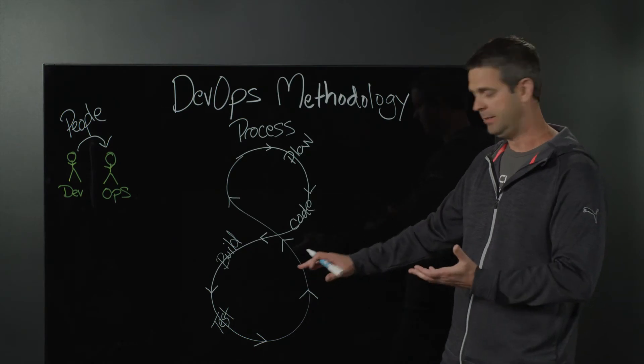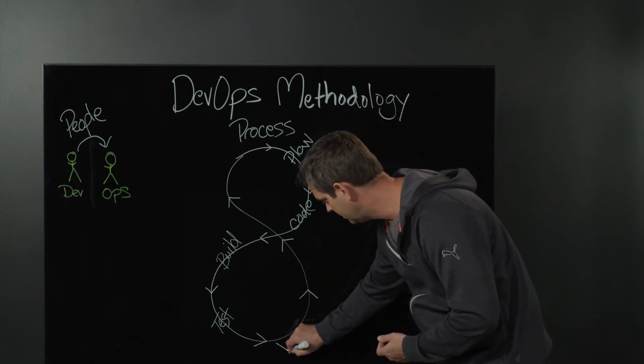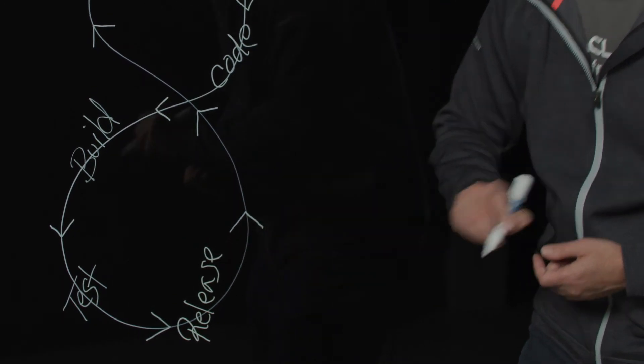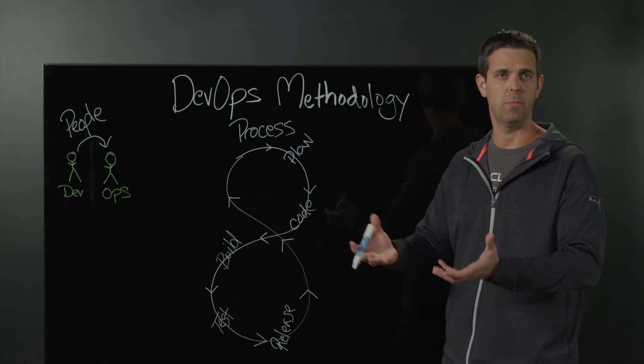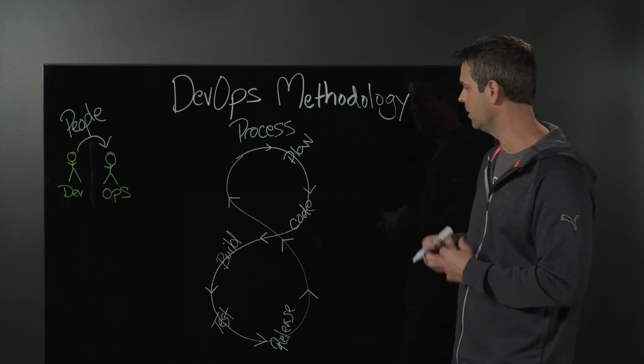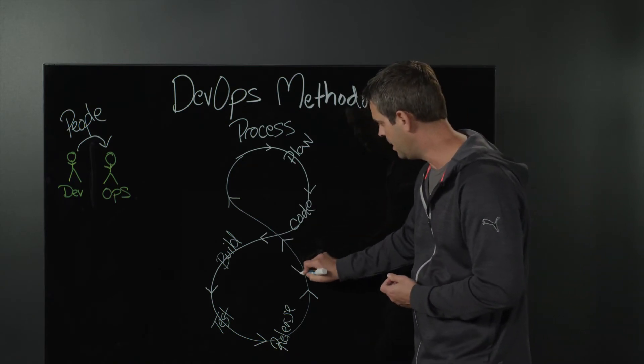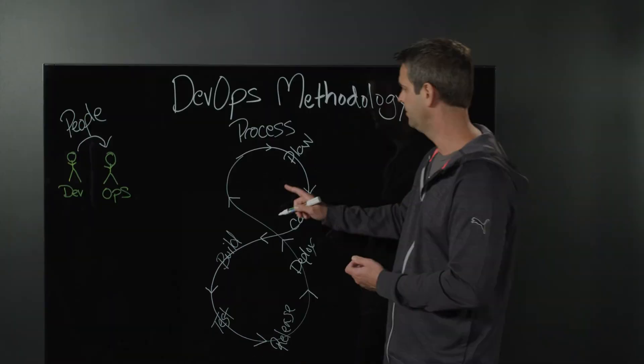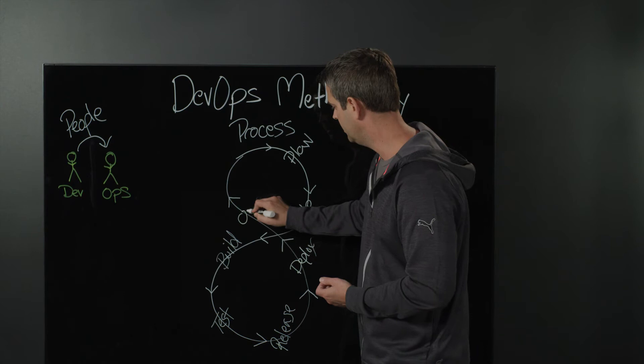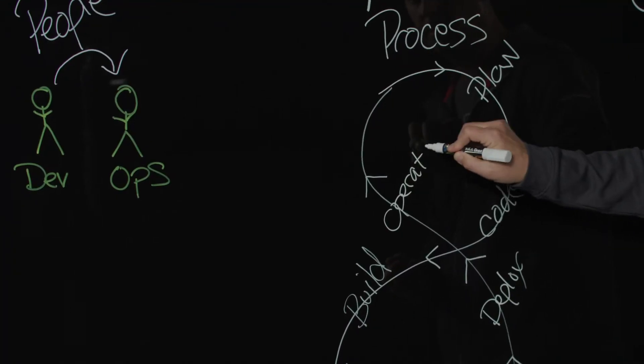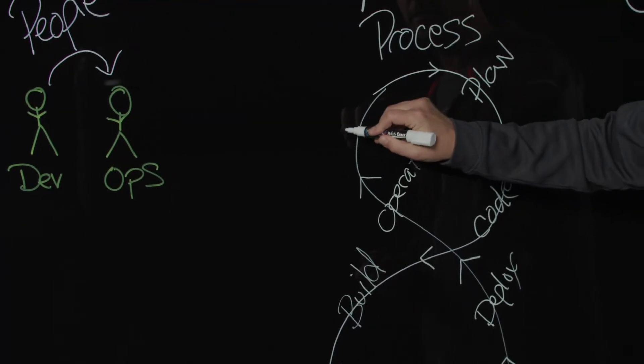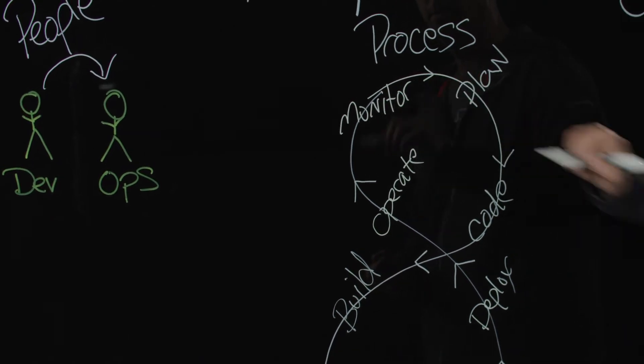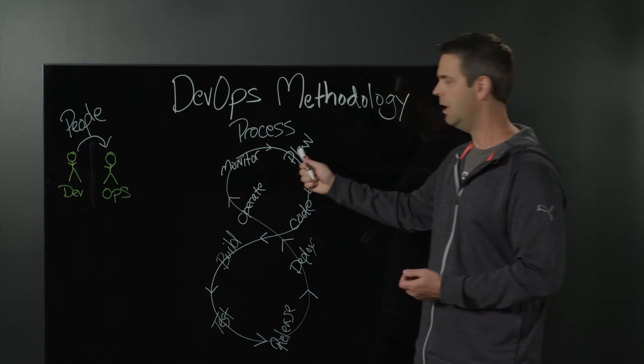Once we have tested the code, we're ready to go ahead and release. That's basically marking that package readily available for deployment to production. We'll go ahead and deploy that next. We're going to go ahead and operate the code at this point, and then finally monitor. And where does that bring us? Right back to the planning phase.